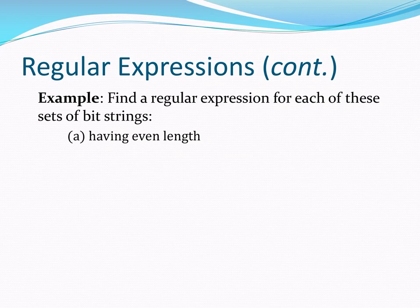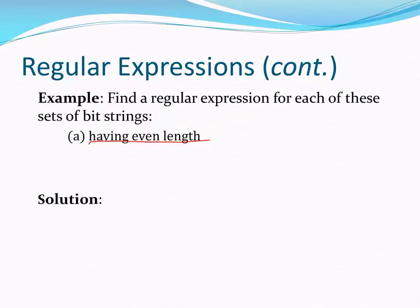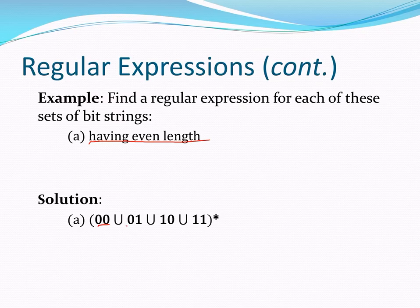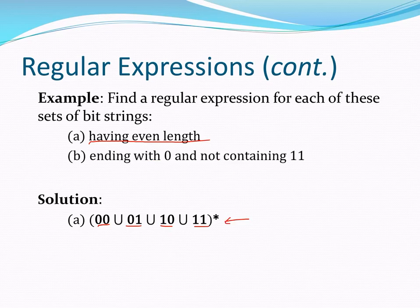Now let's go the other direction and find a regular expression for a given English description. For the set of strings having even length: if I build them up from pieces that only have length two, I'll always have even length. So I take all possible two-bit words — 00, 01, 10, 11 — union them and take the Kleene closure. That gives all possible strings with even length.